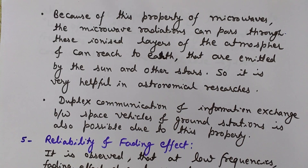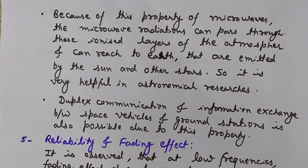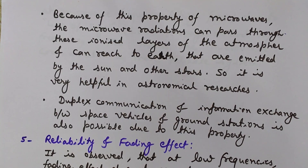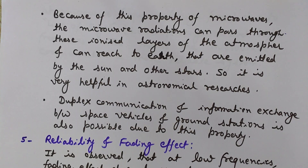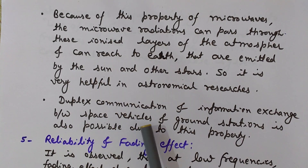These microwave radiations can easily reach the earth after passing through the ionized layer. The benefit is in the field of astronomical research — various stars and our sun emit microwaves lying above this ionized layer. When they emit microwave radiations, those radiations can easily pass through the ionized layer and we can use this information for astronomical researches.